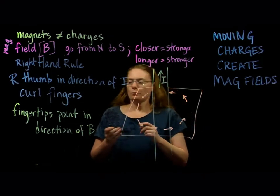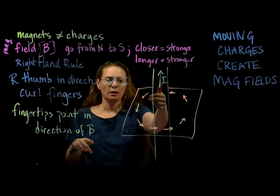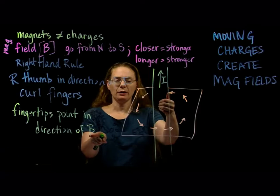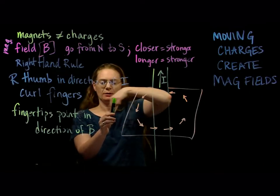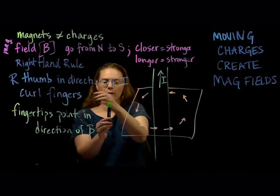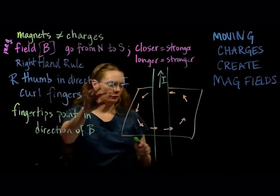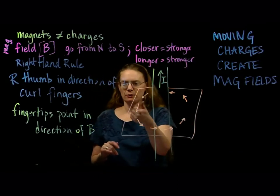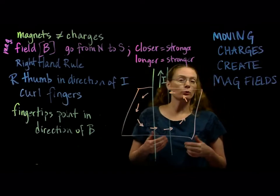An example: put your right thumb in the direction of the current and curl your fingers — your fingertips point in the direction of the magnetic field. So if this is my wire, the magnetic field is going to be going like this. At this point right out here it points that way; curl here, it points this way; curl there, it points here. So the right-hand rule for a current-carrying wire: thumb in the direction of the current, curl your fingers, fingertips point in the direction of the magnetic field. That's one of the right-hand rules we have in physics.